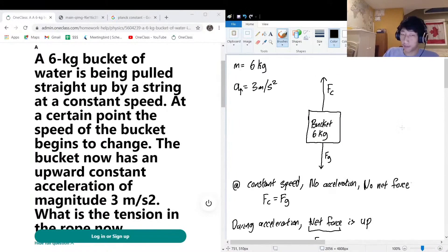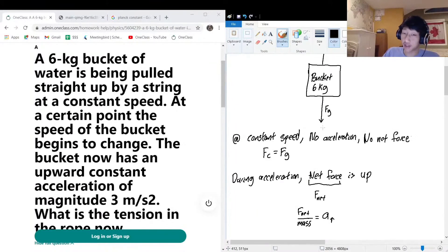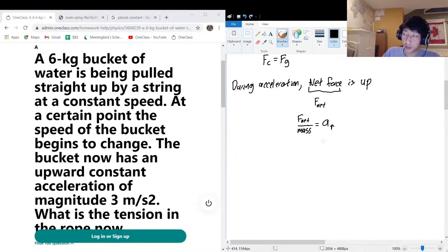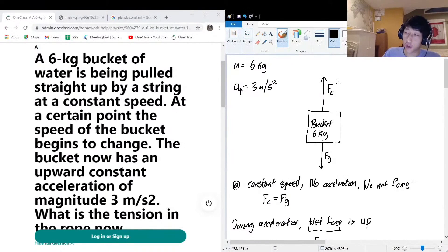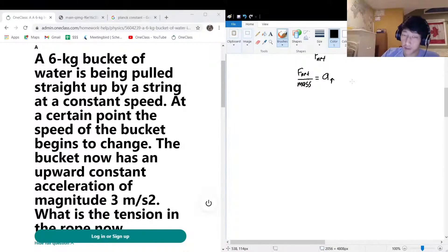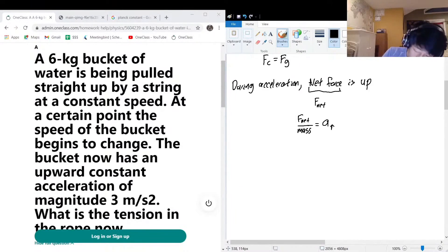Okay, so if we go back here, F_c not only has to balance out F_g, it's also going to have the additional acceleration upwards. So that's going to be the total amount of tension in the cord, because the cord not only has to hold up the weight, it also has to add the additional force of acceleration. So F_c is going to be the force of gravitation plus F_net.